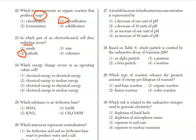24, which energy change occurs in an operating voltaic cell? So voltaic cells take chemical energy and convert it to electrical energy. That is right here in choice 1.